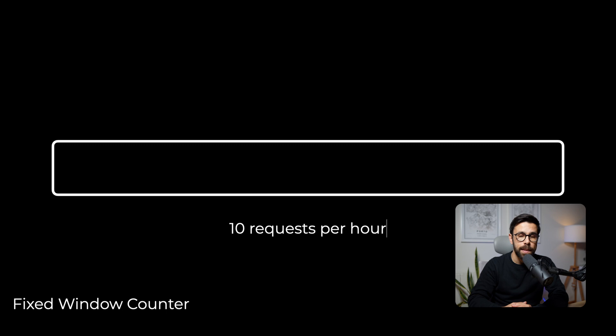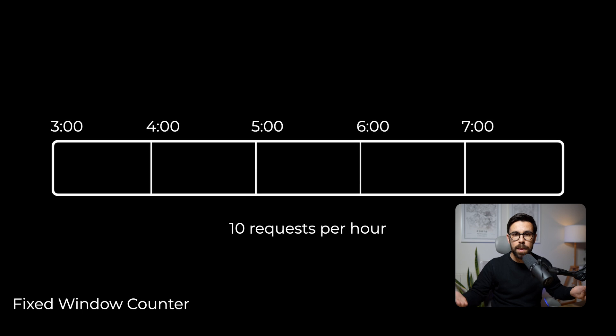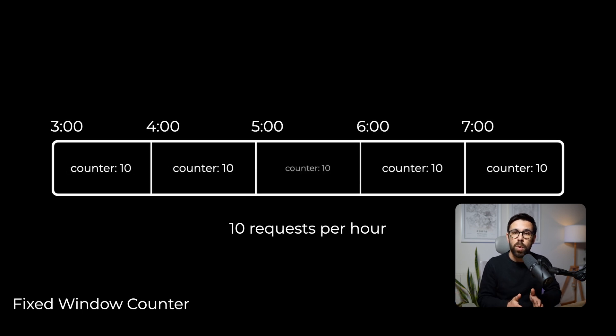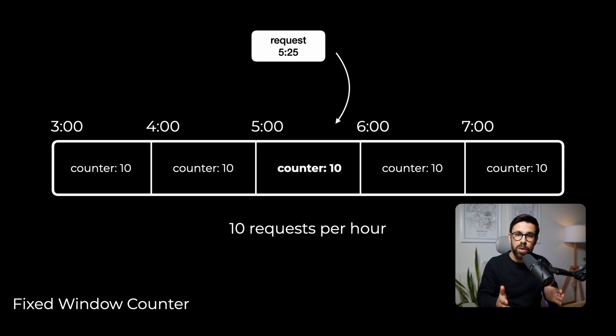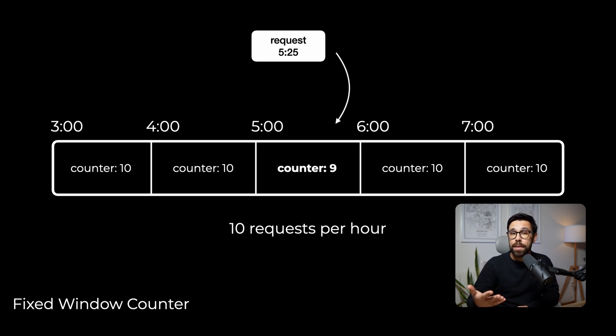The fixed window counter. Imagine you have a limit of 10 requests per hour. You take the timeline, split it into intervals of 60 minutes, and assign a counter to each interval. In a given hour you can accept 10 requests. When a new request comes in, you find the time slot for it and decrement that slot's counter — the request is then processed. If the counter is already zero, the request cannot be accepted and must be dropped. This approach is quite simple to implement and easy to understand, but it has some problems.